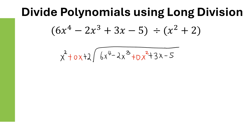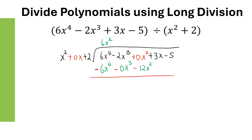Take the first term, 6X to the fourth, divided by X squared — that gives 6X squared. Multiply: 6X squared times the divisor gives 6X to the fourth plus 0X cubed plus 12X squared. When we subtract, change the signs for each term: negative, negative 0, and negative 12. The 6X to the fourth cancels out, leaving negative 2X cubed minus 12X squared. Bring down the next term, positive 3X.